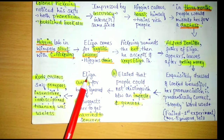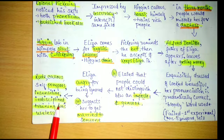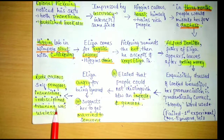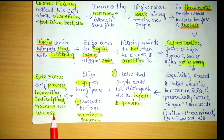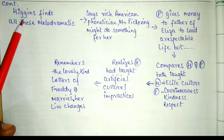Here we see Higgins' callousness — he was self-pompous, very insensitive, and undisciplined. Remember: the person who instilled discipline in Eliza was himself undisciplined, because he loses his control and misbehaves with Eliza during training. He changed a flower girl but was not able to change himself — therefore it was an utter failure.